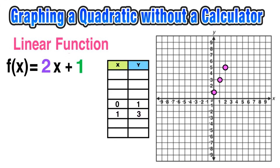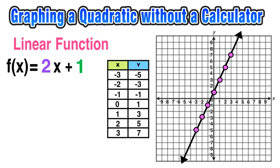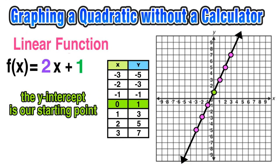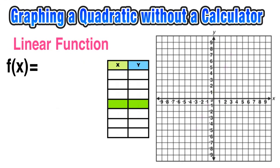Going up 2 over 1 finds the point (1, 3); repeating that slope gets me (2, 5). I can continue to get (3, 7). I can also go in the opposite direction below the y-intercept to find more points, then connect these points by constructing the line. For a linear function, our starting point is the y-intercept and we use the slope to build the line, fill in a table, and construct the graph.